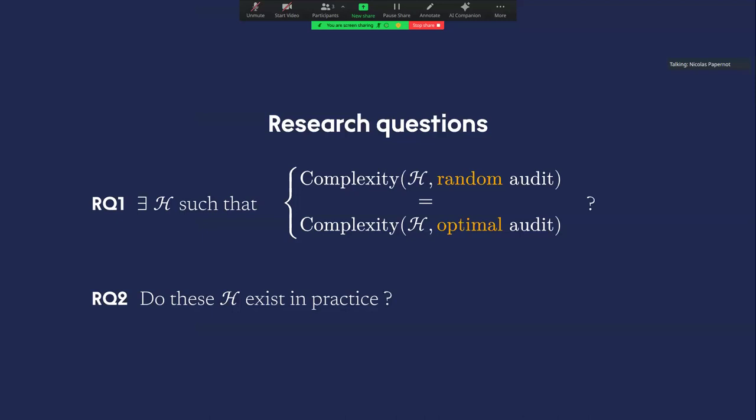So this was the question that we asked. Are there some kind of hypothesis class such that the platform can render the guarantees of any audits meaningless, and can we find them in practice?